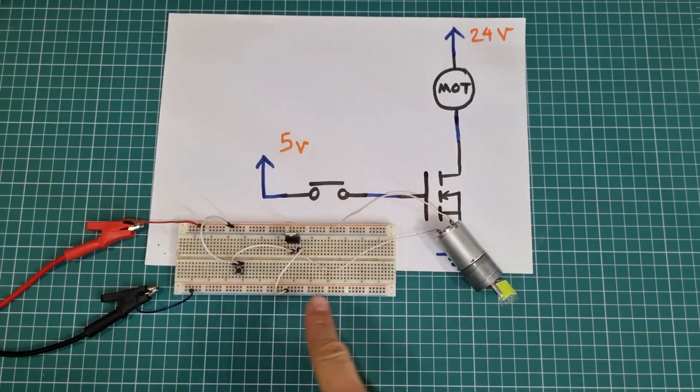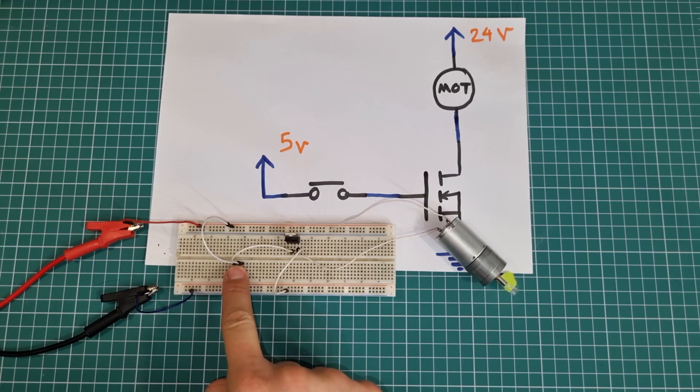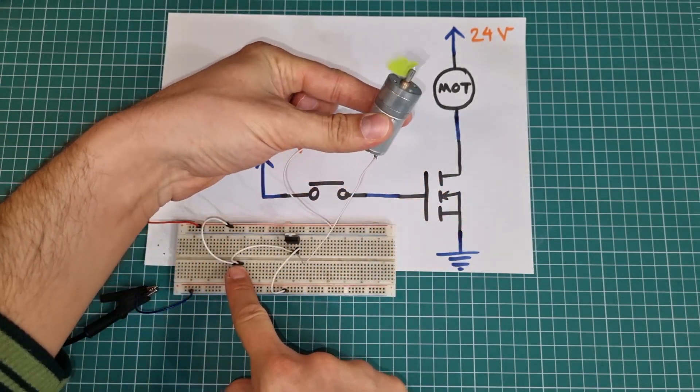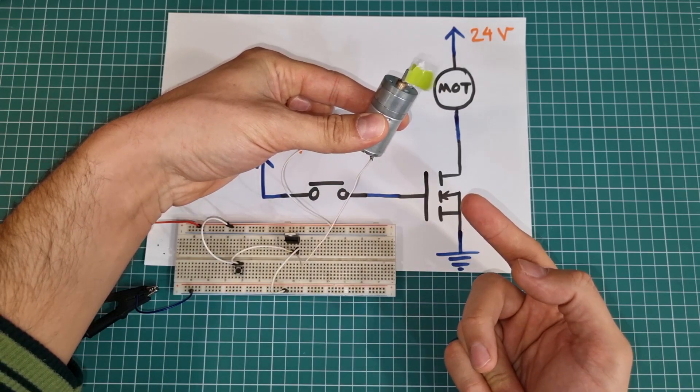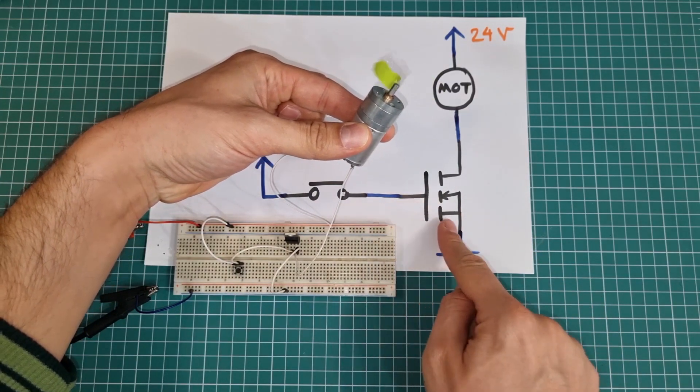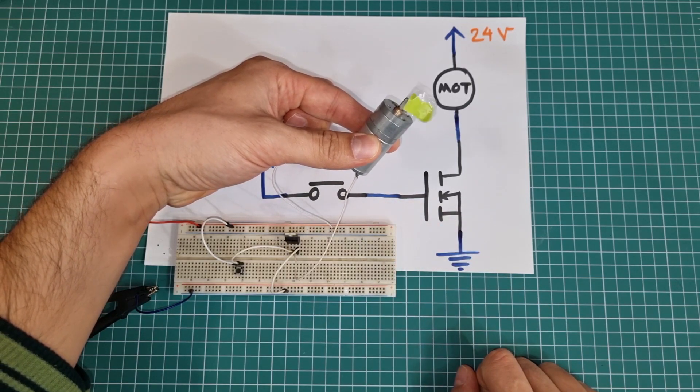Look here carefully. If I press the tactile switch, positive voltage will connect to gate pin, and the motor starts to run. But when I release the button, it still runs. Because the capacitor is charged, and now the MOSFET remains on by the voltage on the gate-source capacitor.